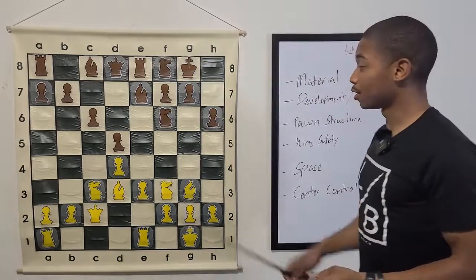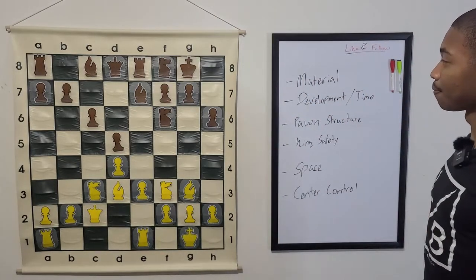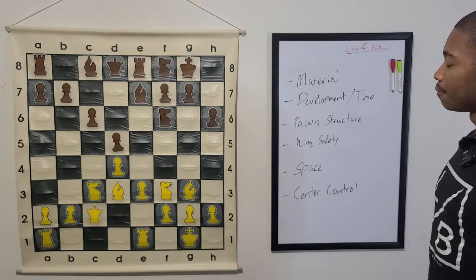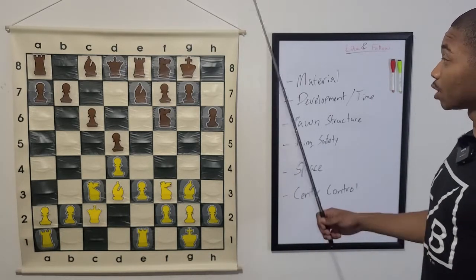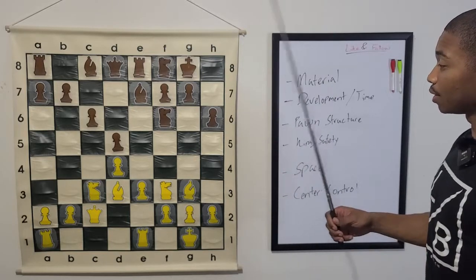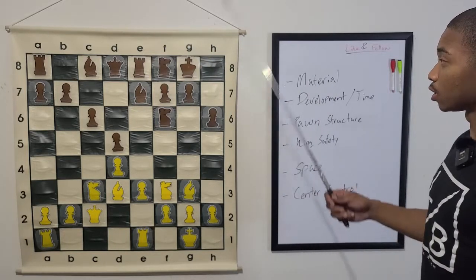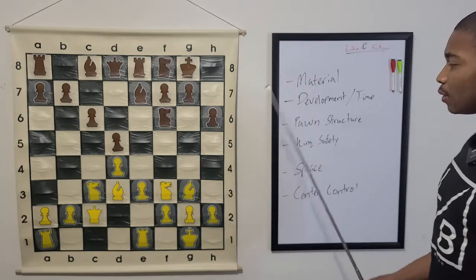But let's consider this position. What is going on? Is the material equal? Seven pawns, seven pawns. Two bishops, two bishops. Two knights, two knights. One queen. Two rooks, two rooks. Equal. Equal enough.